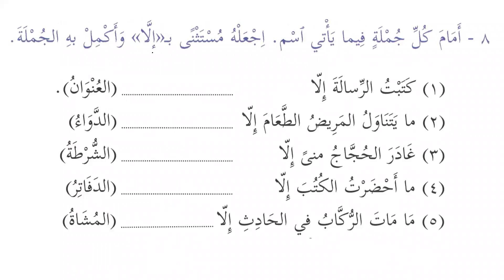Now we have to complete sentences using illa. Is there any connection between risalah and unwan? These are examples of munqatiyun — they are not from the same jins. Risalah is a letter and unwan is the address — two different things, disconnected. Munqatiyun is always mansoob — that's why we reviewed the rules at the beginning.